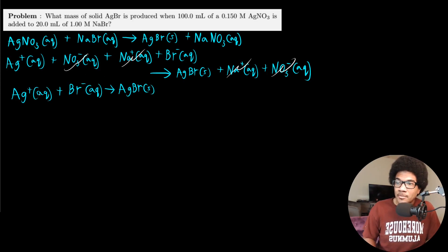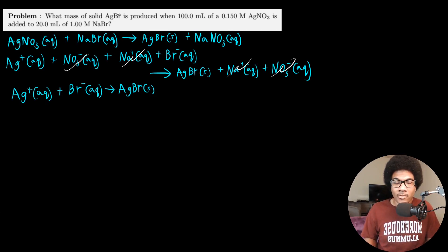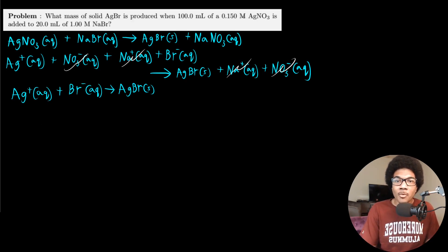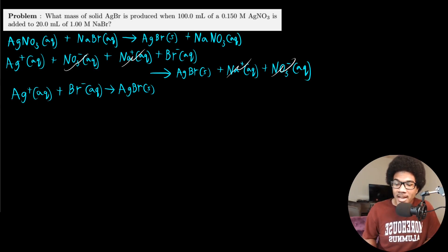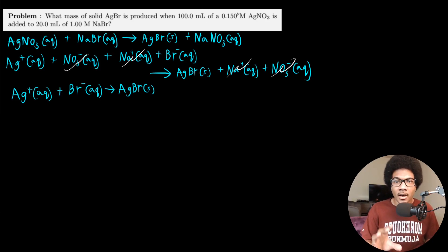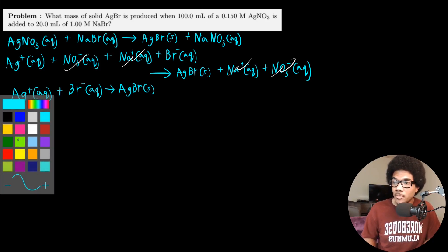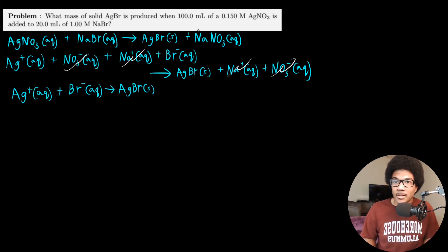We have our net ionic equation, and this is all we actually need to answer the problem. We want to know how much solid silver bromide is produced. We were given volumes and molarities — concentrations for each solution. The first thing we need to do is figure out how many moles of each reactant we actually have. 100 milliliters is 0.1 liters and 20 milliliters is 0.02 liters. We convert to liters because molarity is moles per liter.